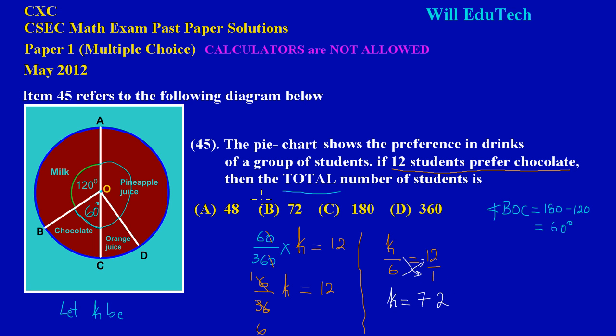So this would be K is equal to 72 because K times 1 is K, and 6 times 12 gives me 72. So obviously option B would be the correct choice, which is 72 students would be the total number of students who took part in the survey. Hope that was useful, see you in the next videos, bye bye.